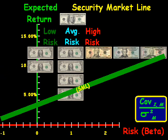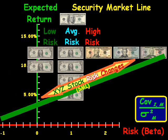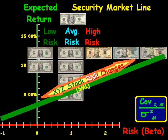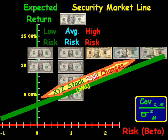Taking a closer look at the SML, there are three different ways it can be altered. The first way is simply how the security's risk changes. For example, XYZ stock could become riskier or less risky over time, depending on volatility, business risk, or other factors discussed earlier.